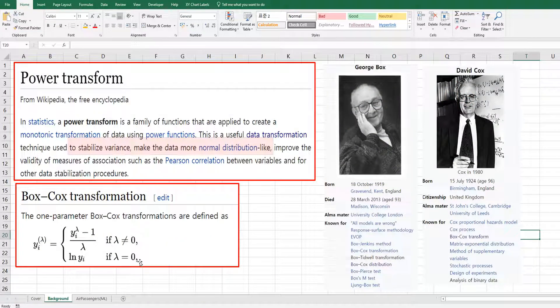Box-Cox transformation is one of the famous power transformations in statistics. It is to stabilize variance and make the data more normal distribution-like. These are Box and Cox portraits, and Box is 5 years older than Cox.